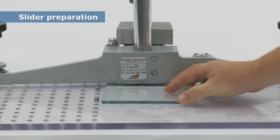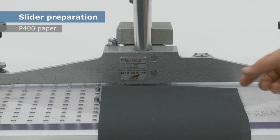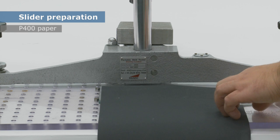With the glass plate in position, the P400 paper is secured in place and the contact area, commonly referred to as the footprint, is set.